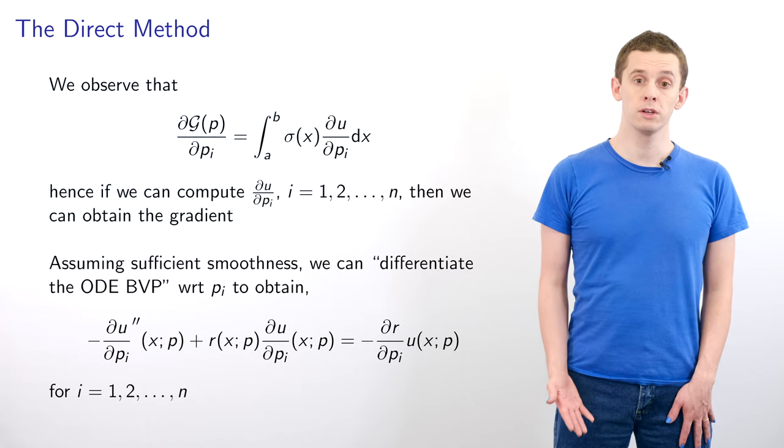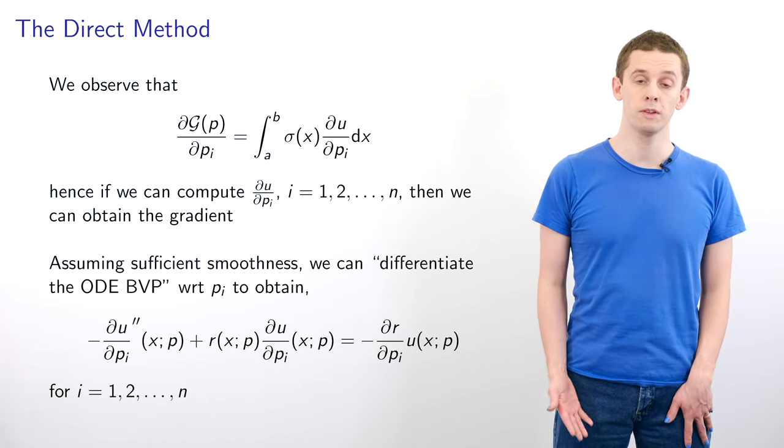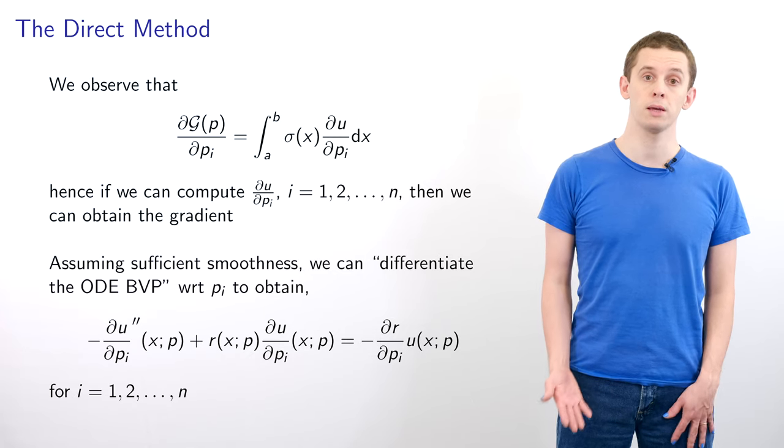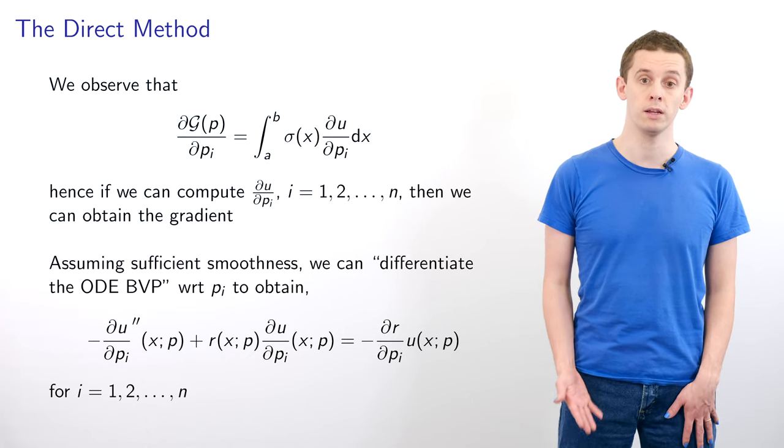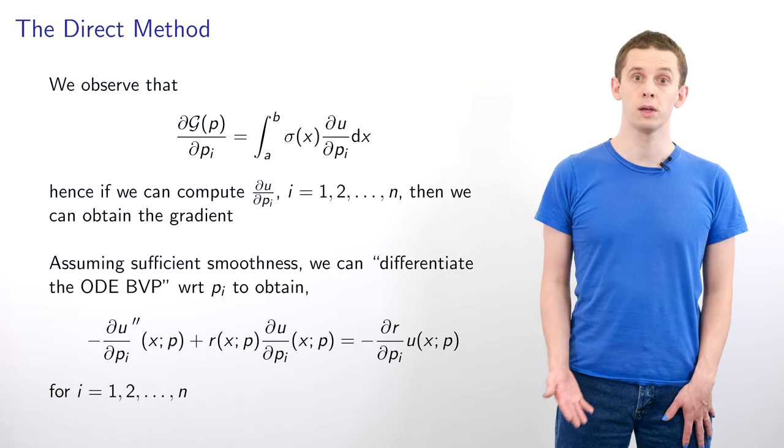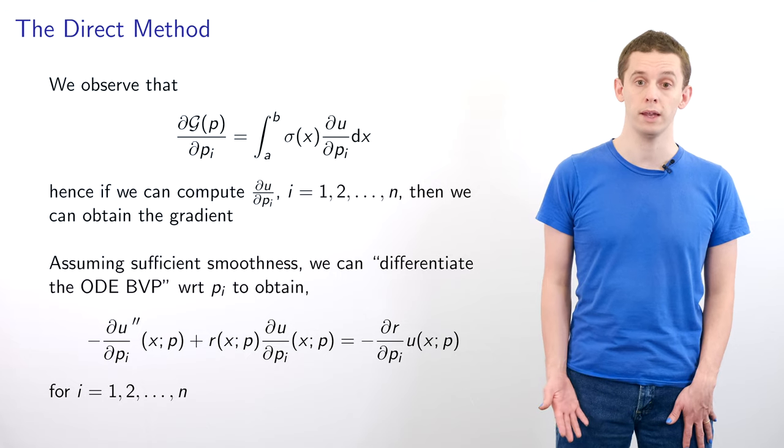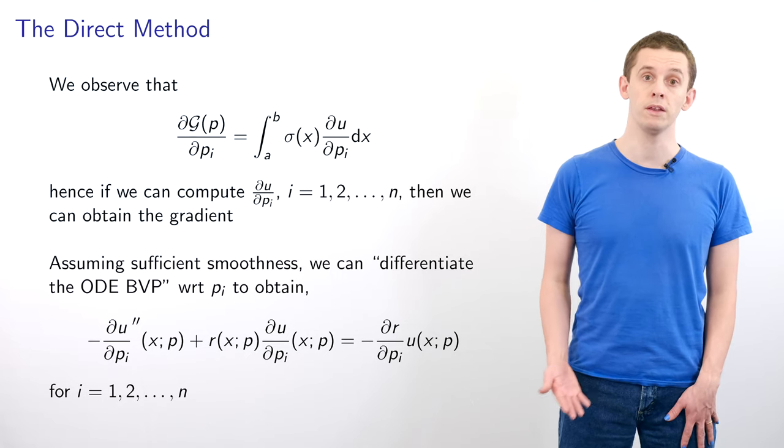We can observe that dG/dp_i equals the integral from a to b of σ(x) du/dp_i dx. Therefore if we can compute du/dp_i for i=1,...,n then we can obtain the gradient.